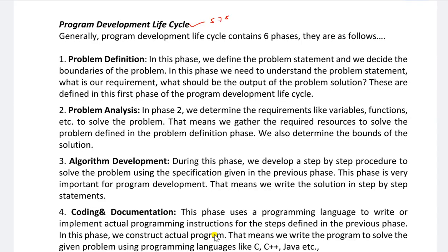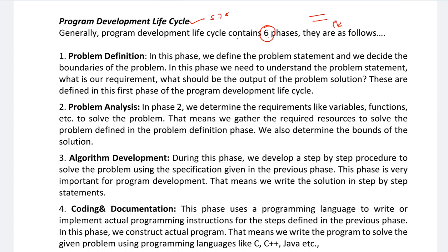In order to develop any program, the Program Development Life Cycle contains 6 phases. The first is Problem Definition, then Problem Analysis, then Algorithm Development, then Coding and Documentation, then Testing, and finally Maintenance. These are the 6 phases or steps involved in any program development life cycle.